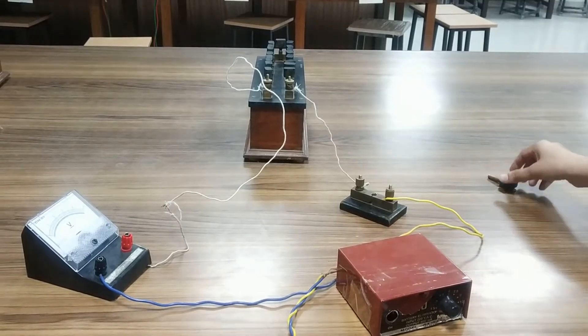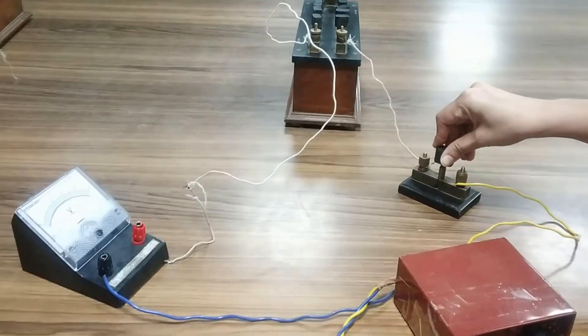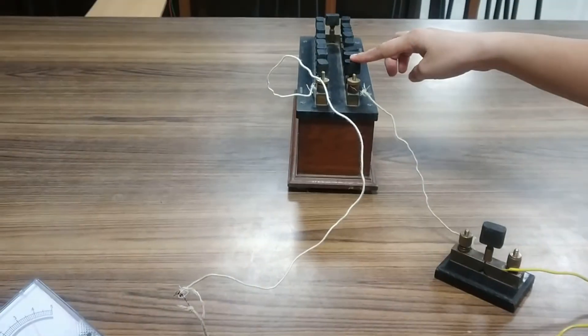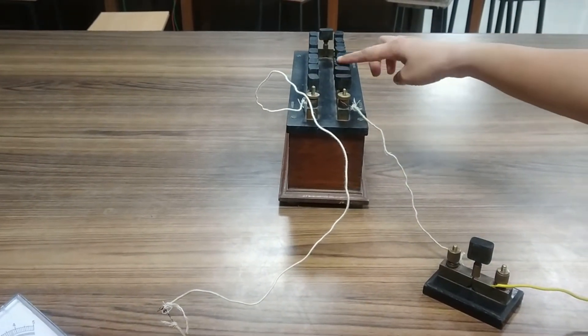Now, first of all, insert the key in the circuit and make sure that all the metal plugs in the resistance box are inserted tightly.